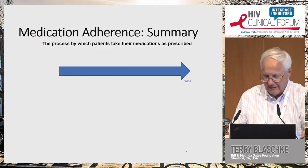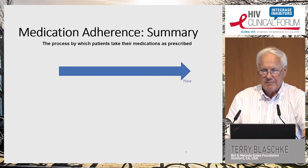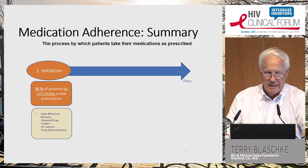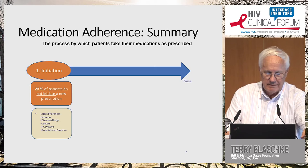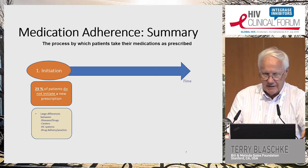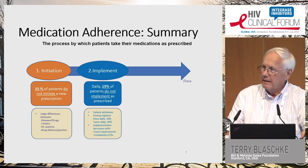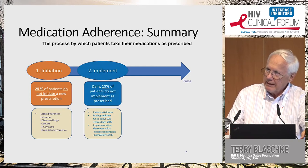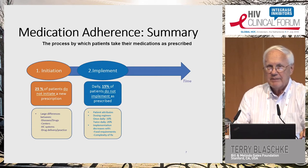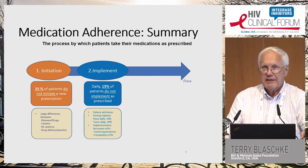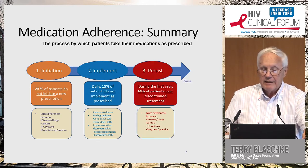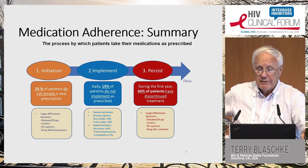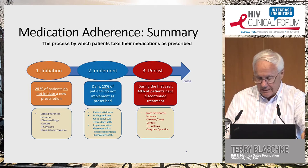Medication adherence is a process by which patients take their medicine as prescribed. It starts with initiation — 25 percent of patients do not initiate a prescription. There are lots of reasons why patients don't initiate their drugs. I'm going to talk a lot about implementation, particularly in terms of the development of drug resistance, and patterns of implementation or non-implementation are going to be very important. And then finally there's persistence — during the first year after therapy, for example in HIV, 40 percent of patients have discontinued their treatment.